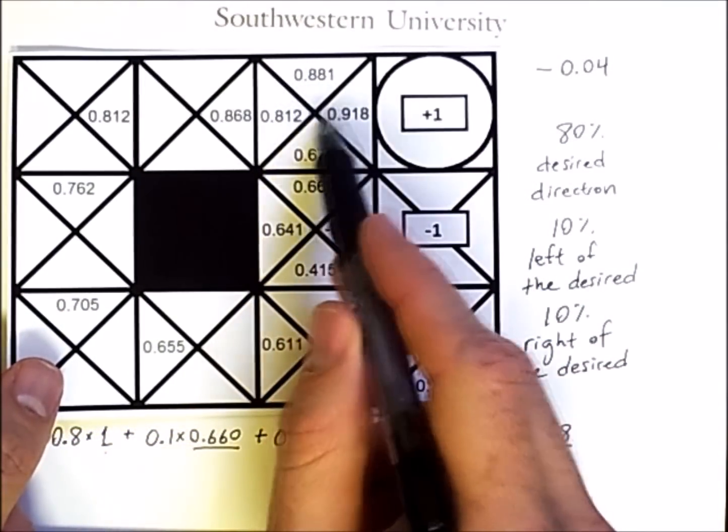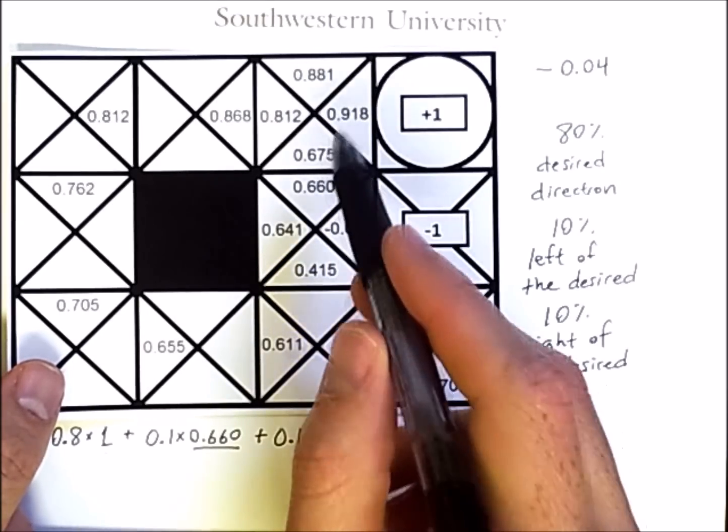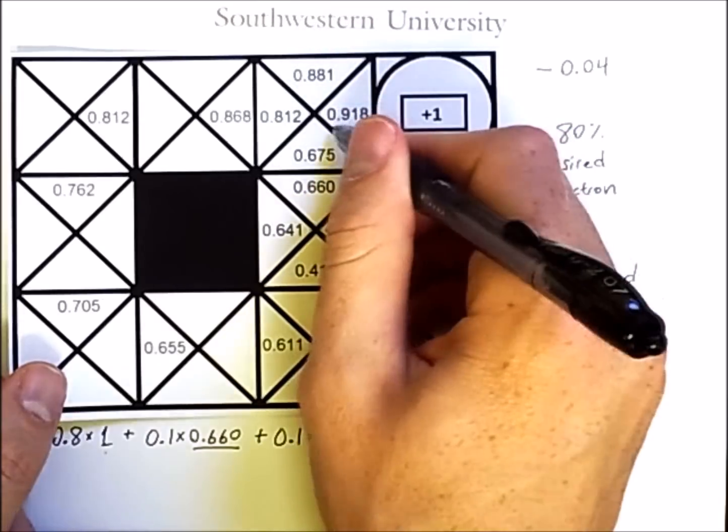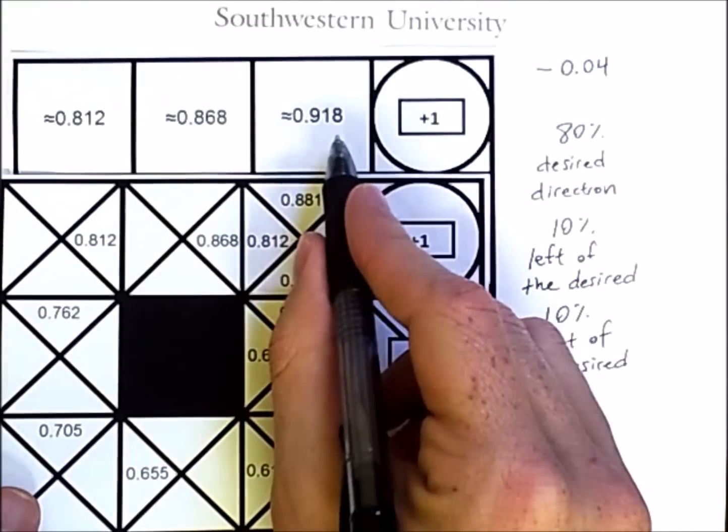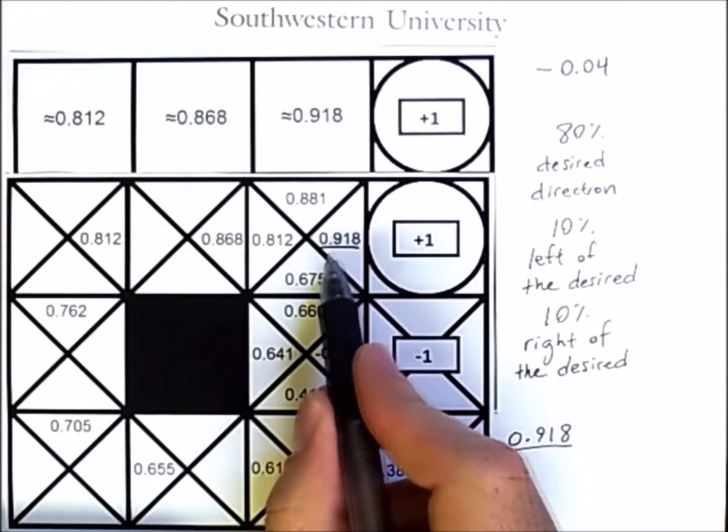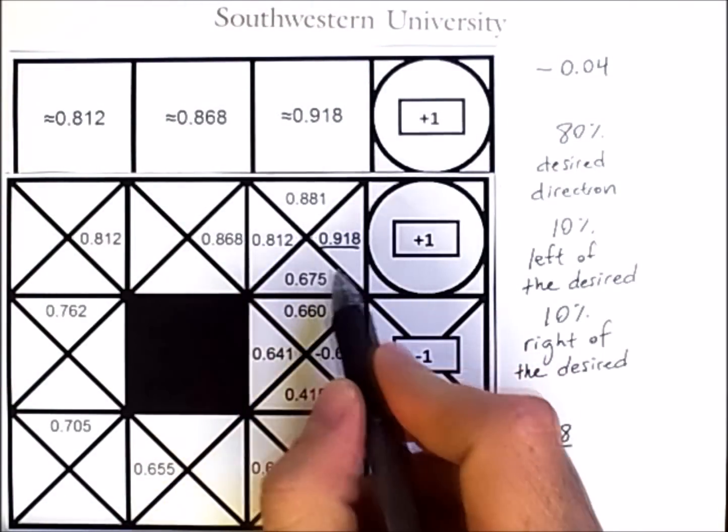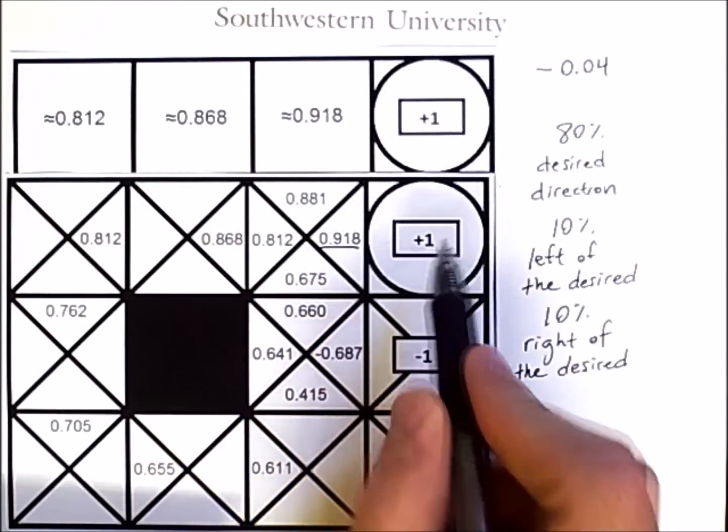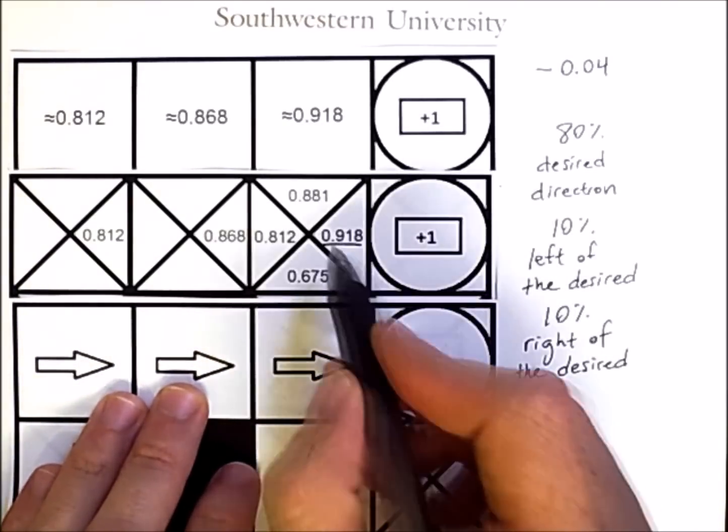Here, each of these squares is split into fourths, and the value here is the same as the value there. The reason for that is that the position of this number in this square indicates that moving to the right, which is the optimal action, has this value.